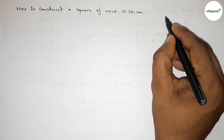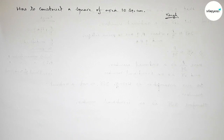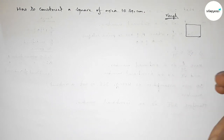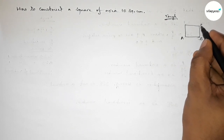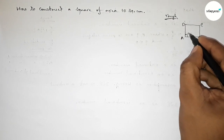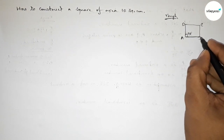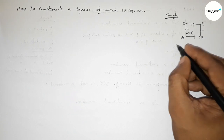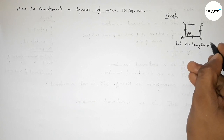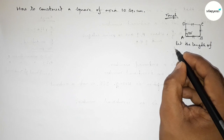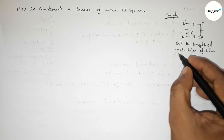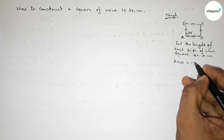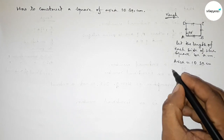First, roughly discussing some important calculations. We draw a square ABCD with equal sides. We know that all the angles of a square are 90 degrees and all the sides are equal. Let us take the length of each side as 'a' centimeters. We know that the area of this square is 10 square centimeters.